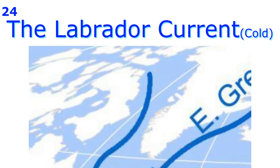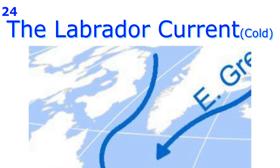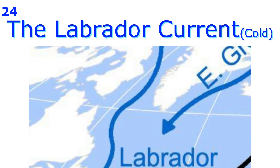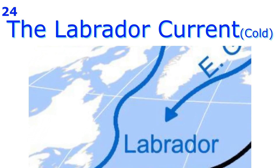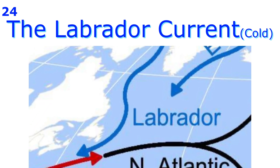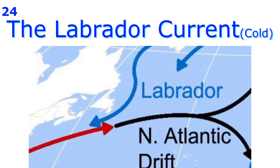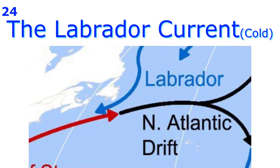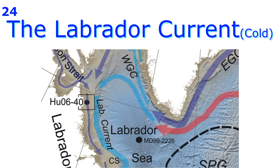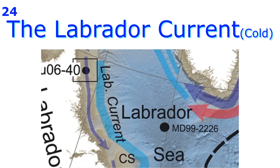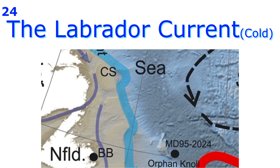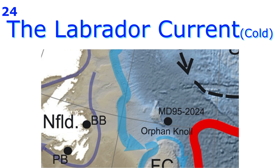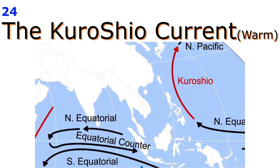The Labrador Current flows southwards from the Atlantic Ocean along the coast of Canada. This is a cold current, as it originates in the Arctic Ocean. It makes the region along which it flows very cold and keeps the coast ice-bound in winter.